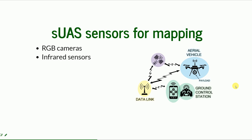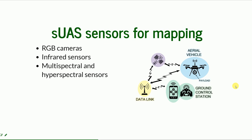A more advanced way to collect spatial data is with infrared sensors that include an additional infrared band, which is widely used in agriculture. If you have more bands, you can use multispectral or even hyperspectral sensors. You can also have laser scanners and thermal sensors. Thermal sensors are not widely used in mapping due to restrictions and challenges, but they can be coupled with different sensors to create thermal maps.